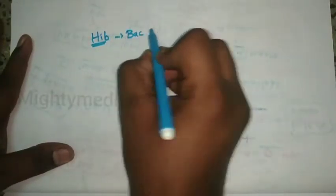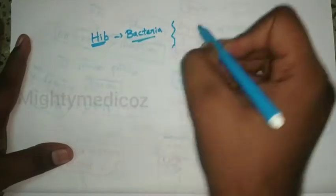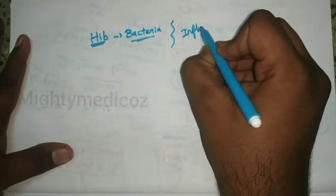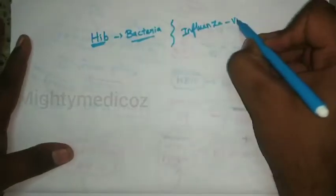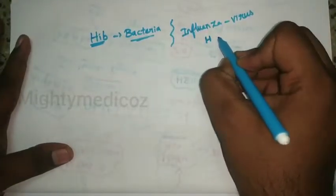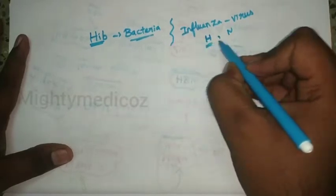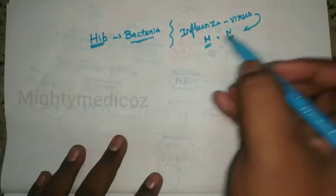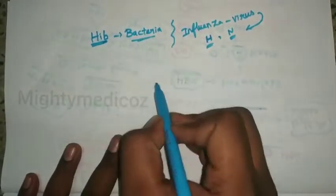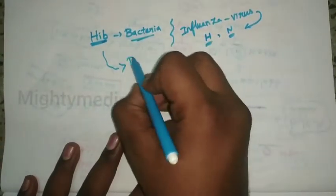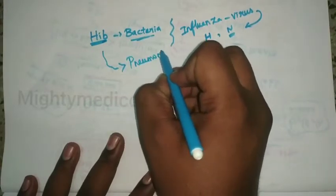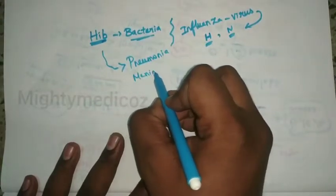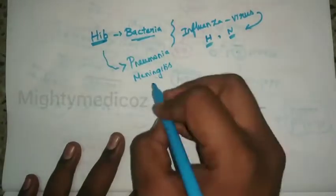The first thing we should know is that Haemophilus influenzae B is a bacteria — that is the essential thing. It is different from the flu virus, which is the influenza virus that has antigens such as the H and N antigens — hemagglutinin and neuraminidase. Haemophilus influenzae bacteria is known to cause pneumonia and meningitis.